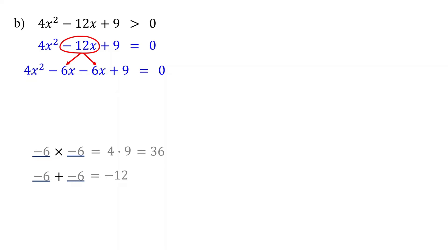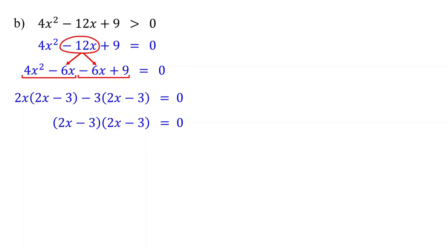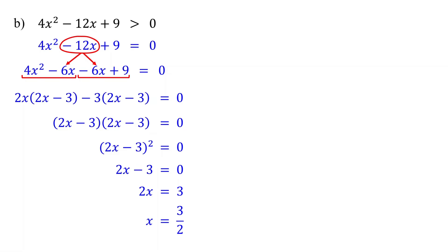The other terms in the equation stay the same. Then, factor by grouping. Group the first two terms together and the last two terms together. Then, factor out the greatest common factor from each group. From the first group, factor out 2x, leaving us with 2x minus 3. From the second group, factor out negative 3, also leaving us with 2x minus 3. Then, factor out the common factor for both groups, which is 2x minus 3. The remaining factor is also 2x minus 3. Notice that both factors are the same, so this quadratic expression is a perfect square trinomial, and we will have only one real solution. Now, set 2x minus 3 equal to 0 and solve for x. We get 2x equals 3, so x equals 3 halves.